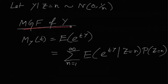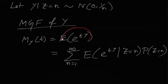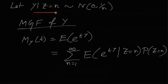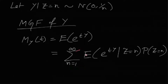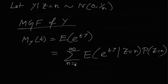So let us find the MGF of Y. The MGF of Y, M_Y(t), equals the expectation of e^(tY). Now, since we know the distribution of Y given Z but not the marginal distribution of Y, we have to condition on Z. By the law of total probability, this is the summation over n from 1 to infinity of the expectation of e^(tY) given Z equals n, times the probability Z equals n.